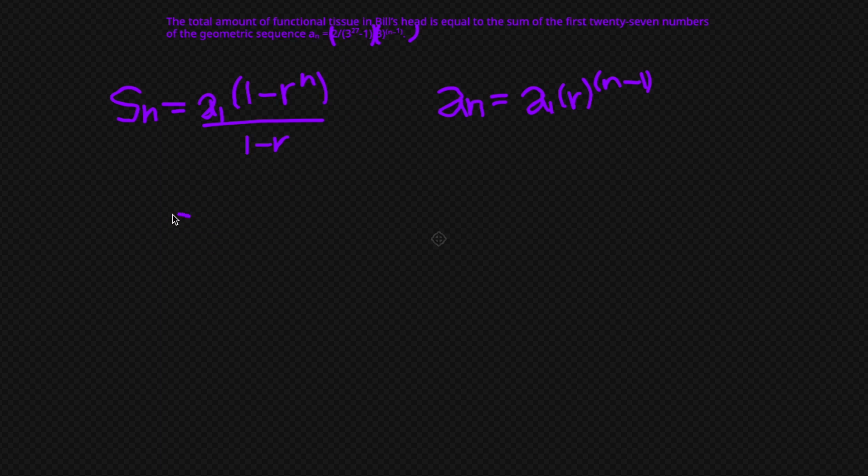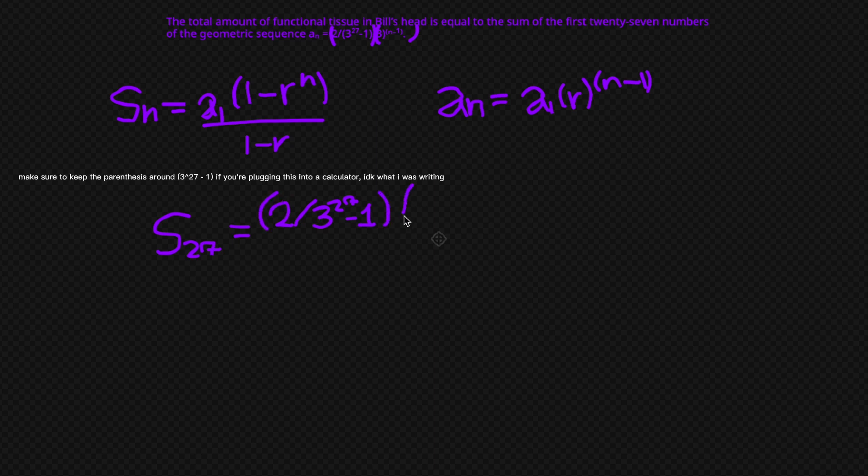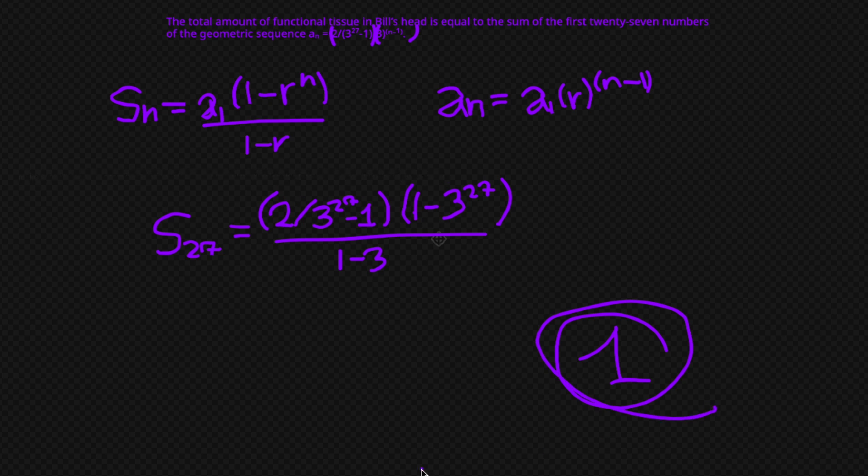So then all we need to do is plug in our numbers. So we have the sum of the first 27 numbers is equal to 2 divided by 3 to the 27th minus 1. That's a. Then we have 1 minus 3 to the 27th over 1 minus 3. And if we plug this whole equation into our calculator, we end up with the grand total of 1. Yeah.